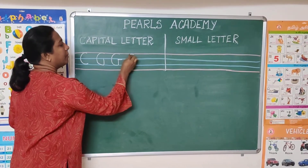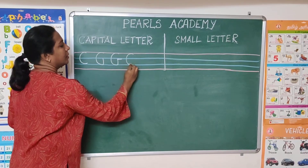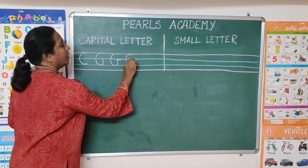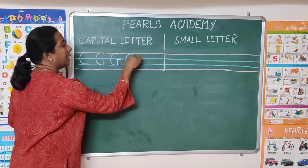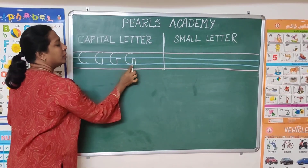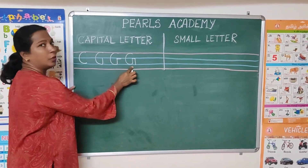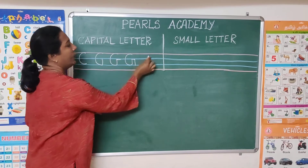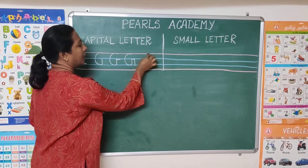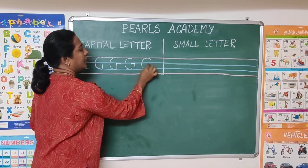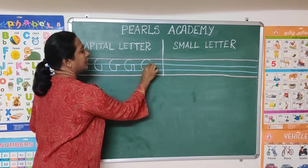The fourth step — same way, draw a sleeping line. Again you have to come down. So you know how to write capital G.